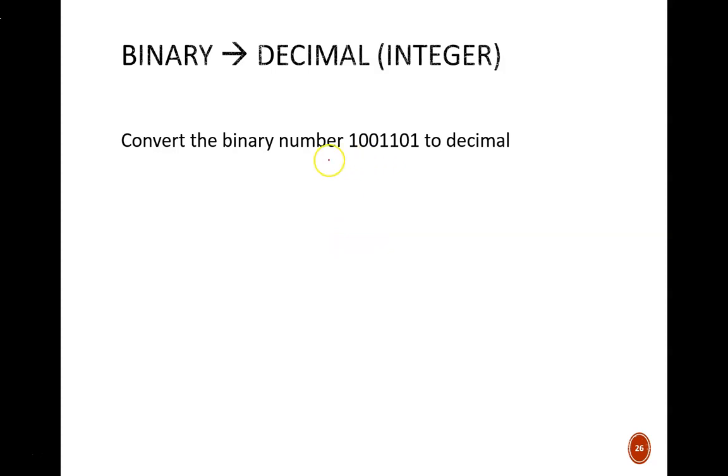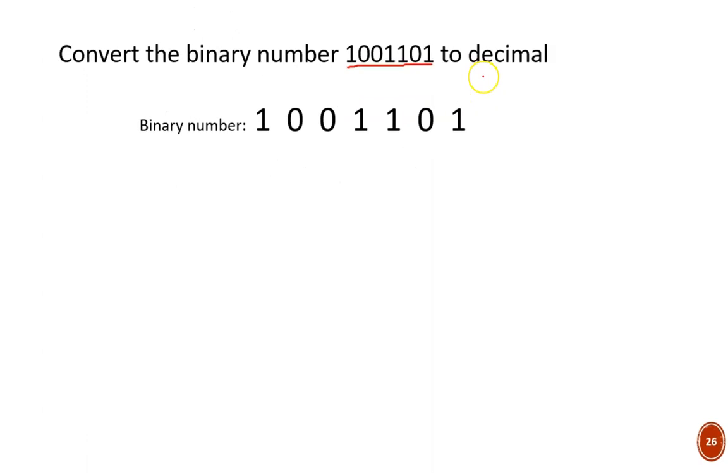Here we see a common task. Given a binary number, convert it into decimal. The approach is simple as long as we know how bit positions work. First I'll rewrite the given number with a little space between each bit. Then underneath I write the weights associated with each bit position. Since this is a binary number, the base is 2.